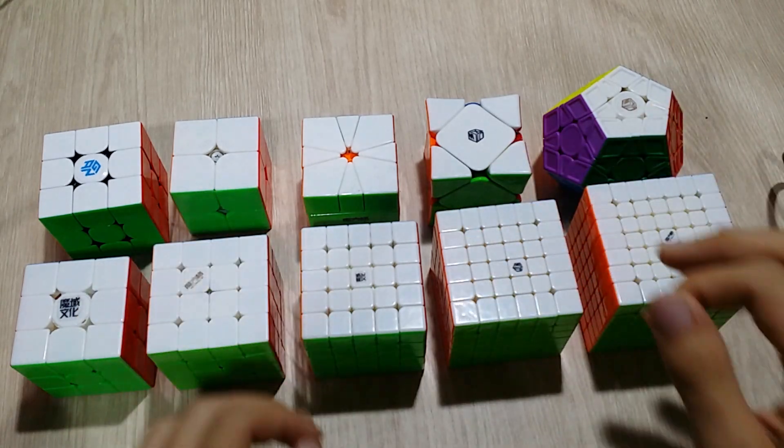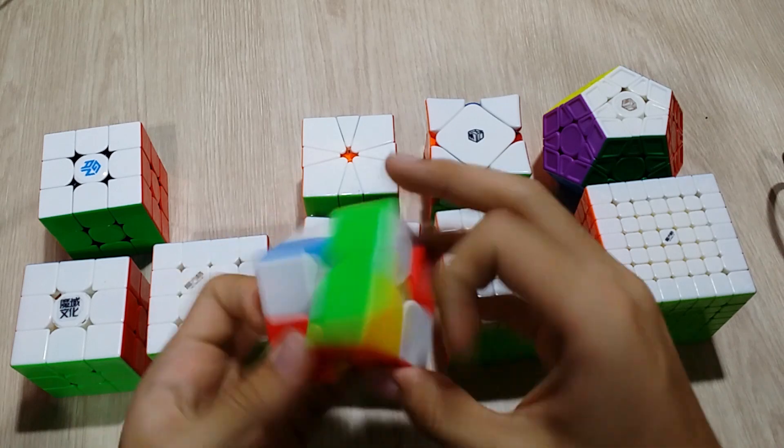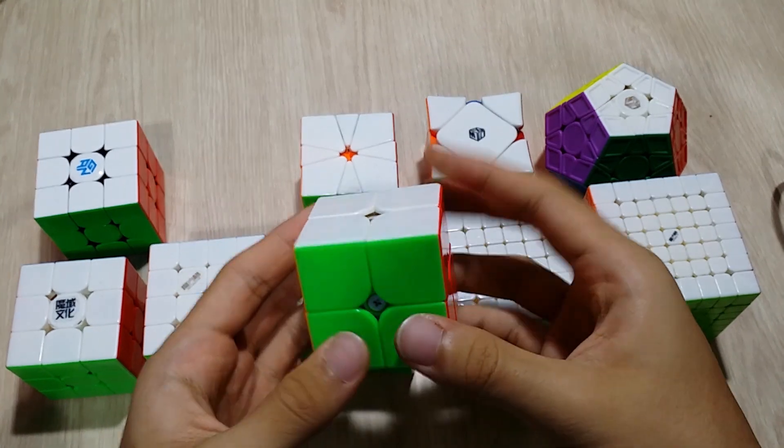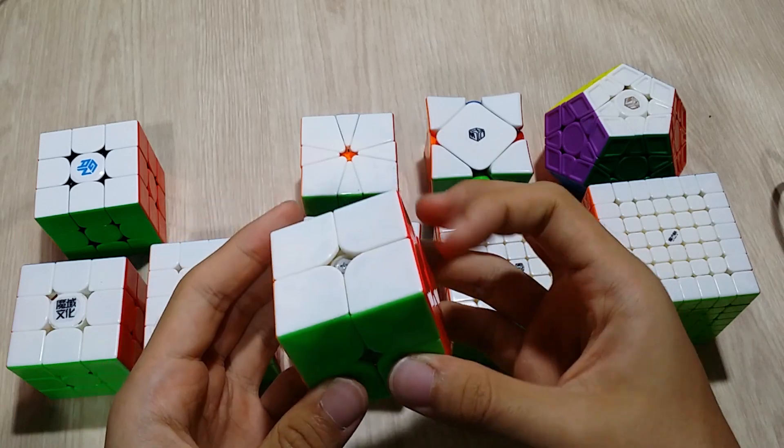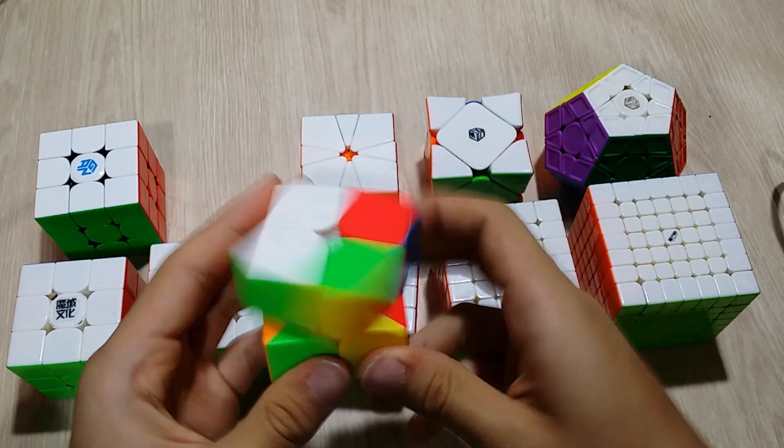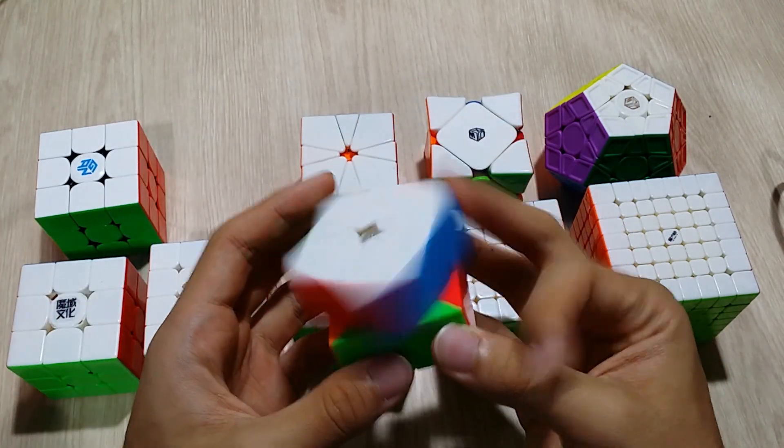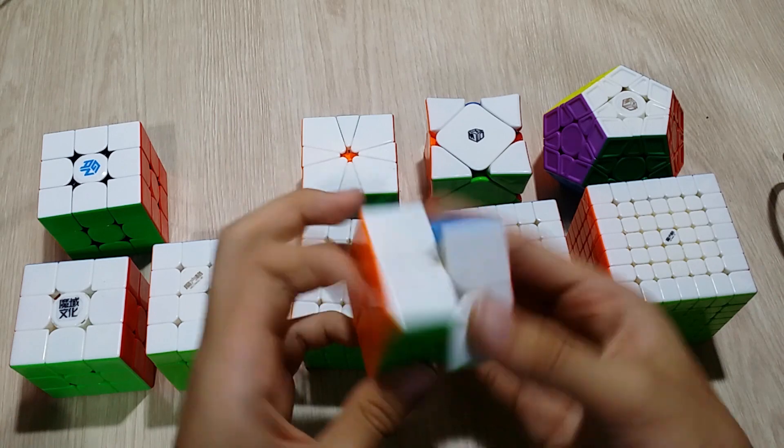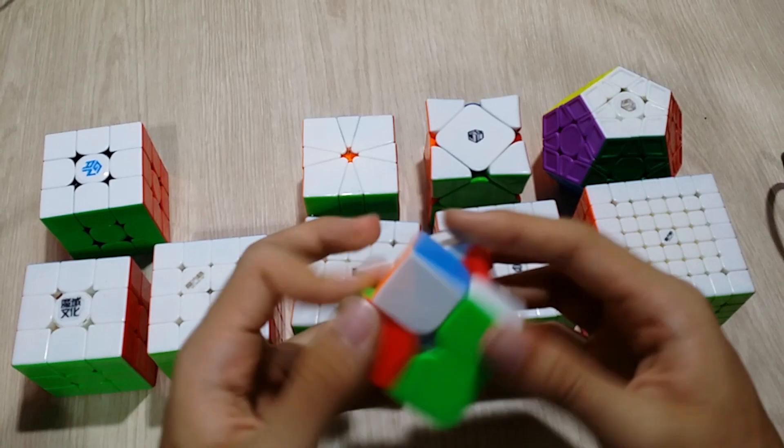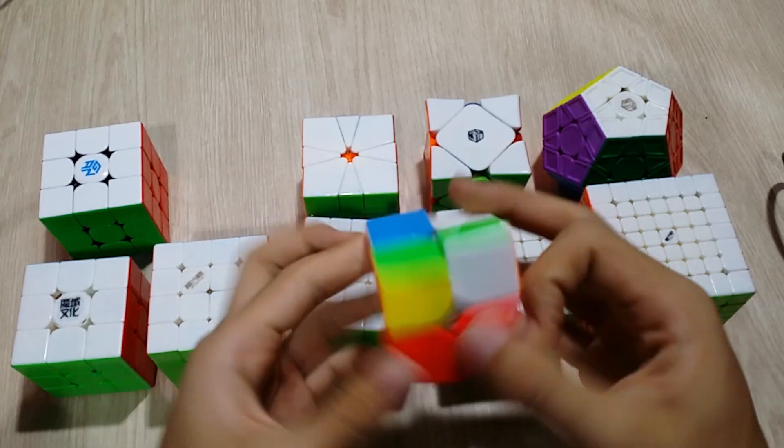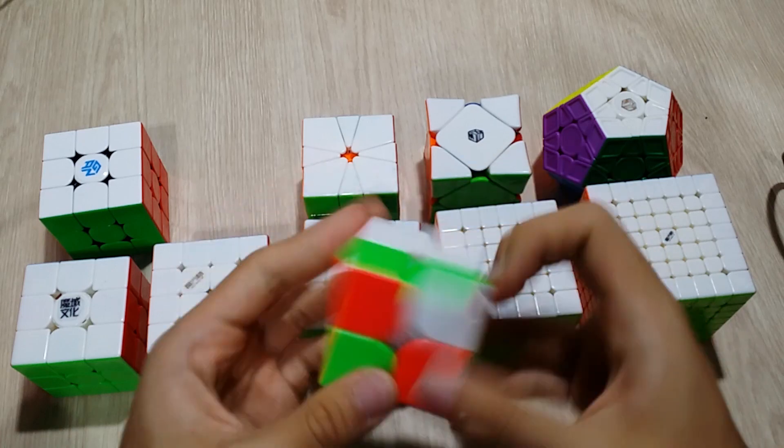So first off, my 2x2: I use the MGC, a very stable and solid 2x2. I don't practice 2x2 often anymore—like, I don't practice it at all—but it's still fun to play sometimes because it doesn't take that long to solve. I average around sub-5, occasionally sometimes like 5.3, 5.4, somewhere like that.